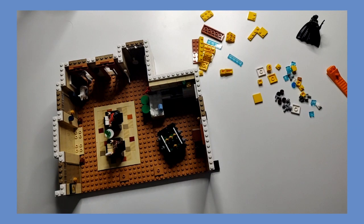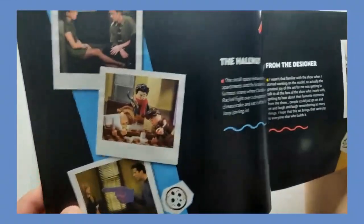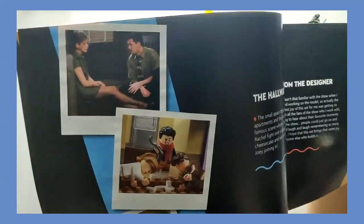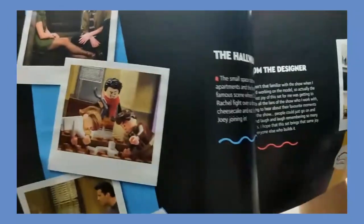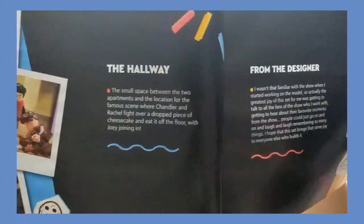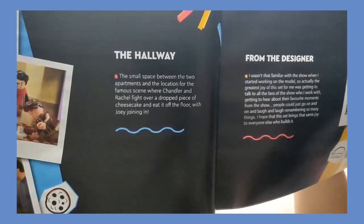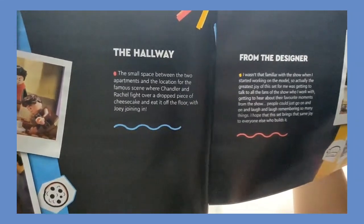Oh shit, I completely forgot to... I forgot that there's more pages I need to read out. Let me see, so we're on page 105. We read out the apartments last time. So there you go, this is what we got. We got the hallway. There's Chandler and Rachel in the hallway, there's the Lego versions eating the cheesecake. And then there's Joey and Rachel in the hallway. The hallway, the small space between the two apartments and the location for the famous scene where Chandler and Rachel fight over a dropped piece of cheesecake and eat it off the floor with Joey joining in.